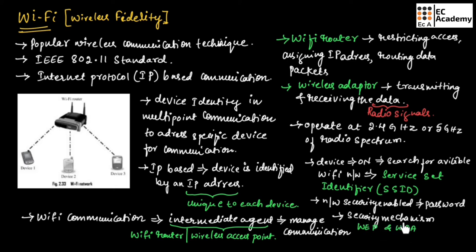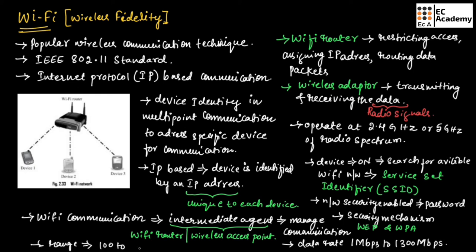Wi-Fi supports data rates ranging from 1 Mbps to 1300 Mbps and offers a range of 100 to 1000 feet. This is about Wi-Fi or wireless fidelity. Hope you have understood the topic. Thank you.